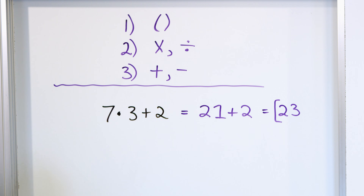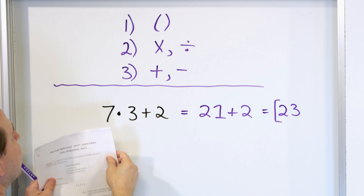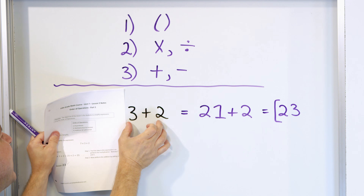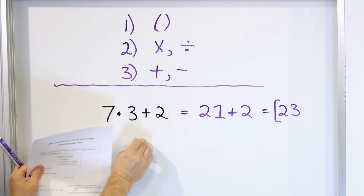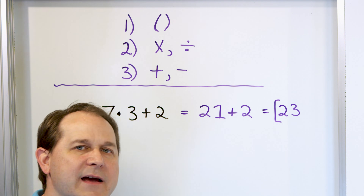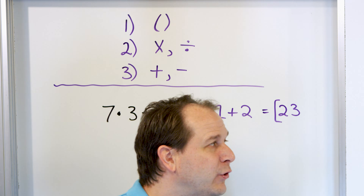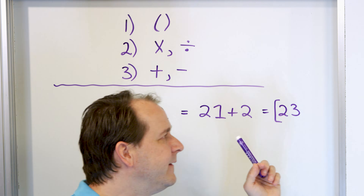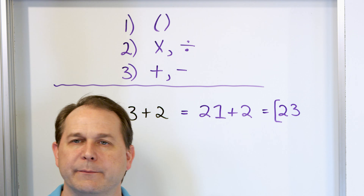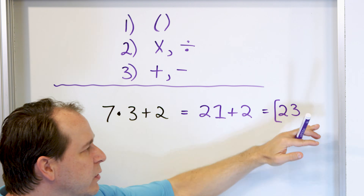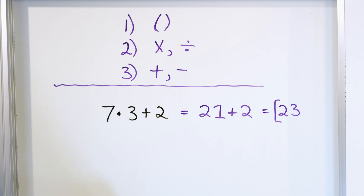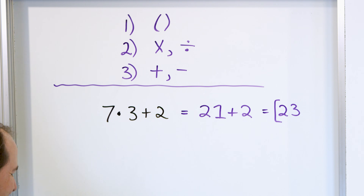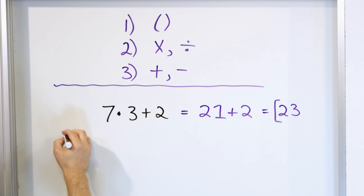Let's do it in the wrong order and see what happens. Instead of doing multiplication first, let's do the addition first: 3 plus 2 is 5. Now we take the 5 and multiply by 7 — 7 times 5 is 35. But 35 is definitely not the right answer. If you take this and put it into a calculator or computer, you will not get 35; you will get 23. So we have to do it in the correct order. Otherwise, the answer is wrong.